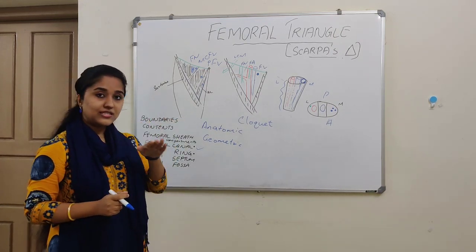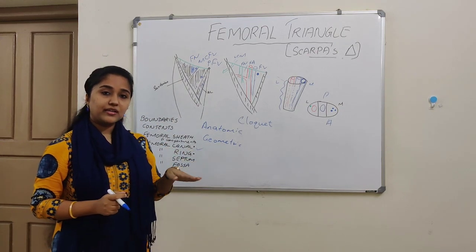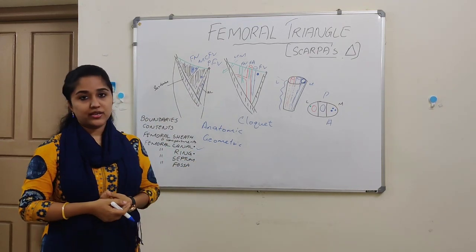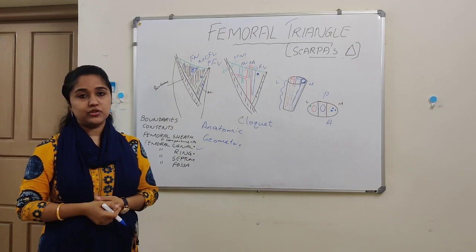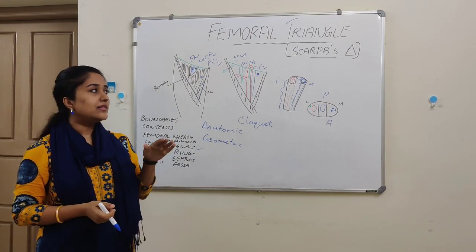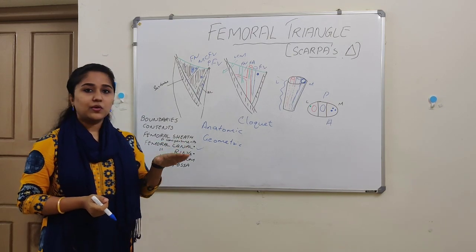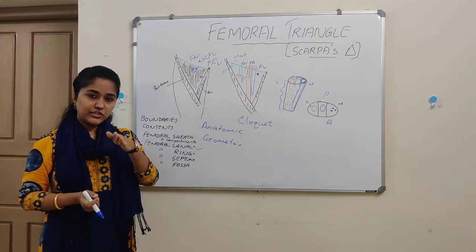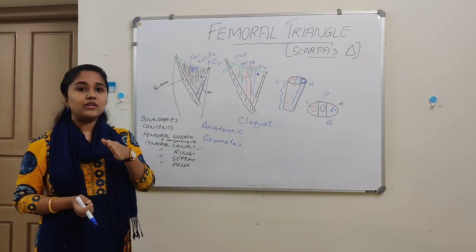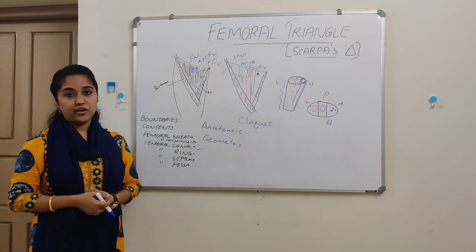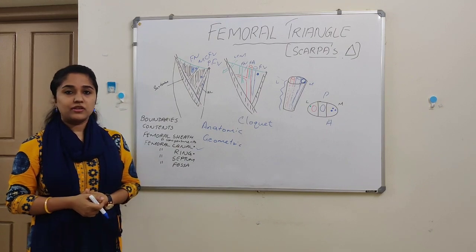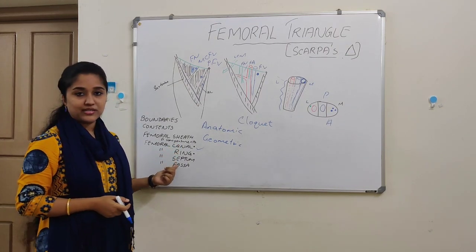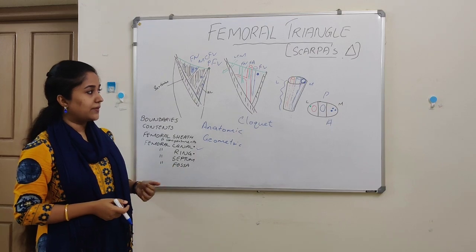The femoral ring is covered by the femoral septum, which is the extraperitoneal connective tissue. The femoral septum is very thin. The region above the septum has a small depression known as the femoral fossa. That covers the femoral canal, femoral ring, femoral septum, and the femoral fossa.